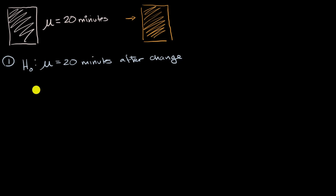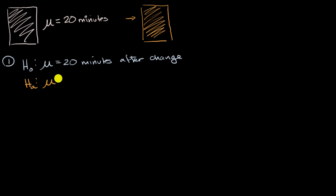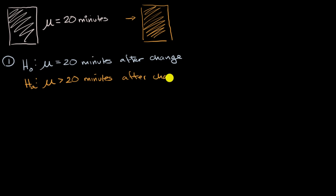We would also have an alternative hypothesis. Our alternative hypothesis is that our mean is now greater because of the change — that people are spending more time on my site — so our mean is greater than 20 minutes after the change.